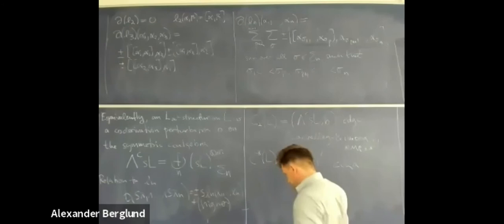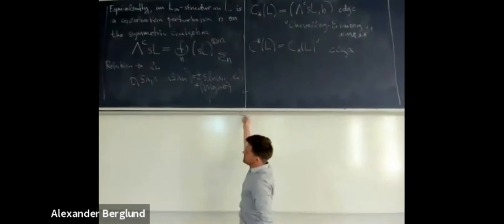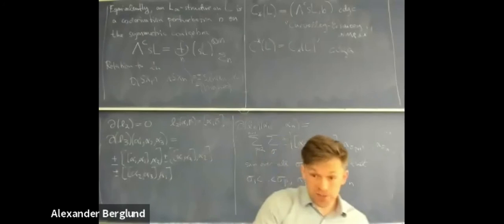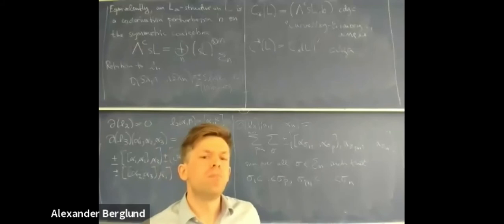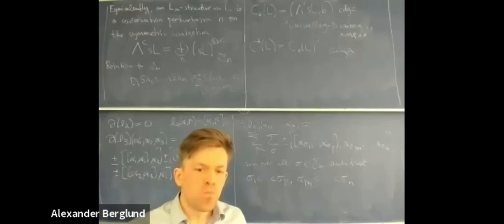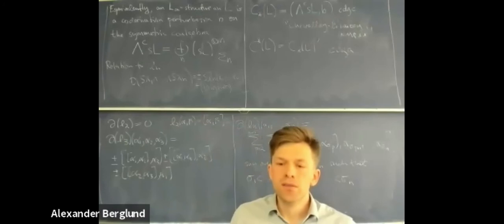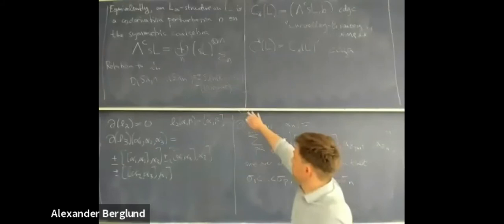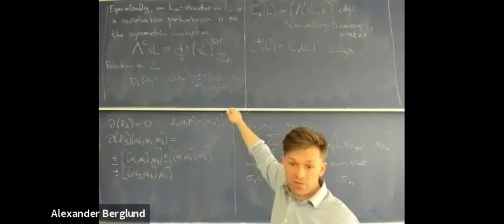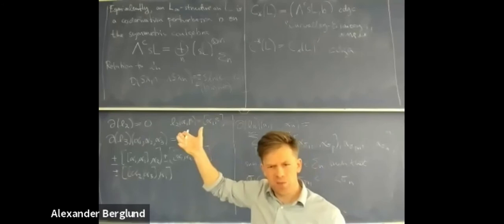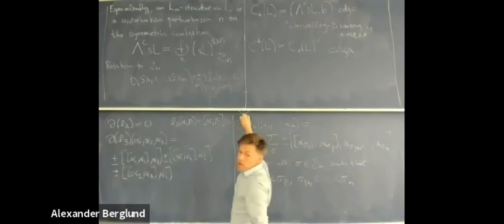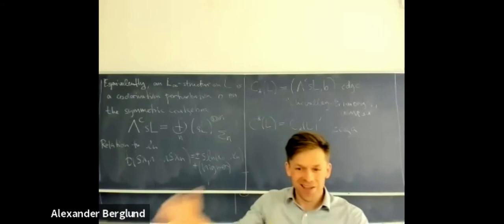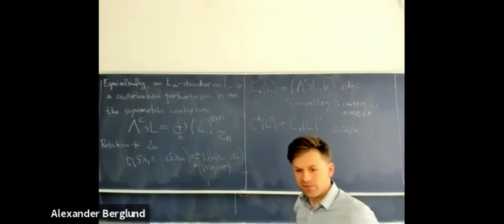There's a question in the chat about anti-commutativity. The anti-symmetry is reflected in the fact that it actually induces a map on the invariants or co-invariants. The reason you get something to be graded-commutative is because we have suspended: when we suspend, anti-symmetry becomes symmetry. So the suspension is what makes that work.